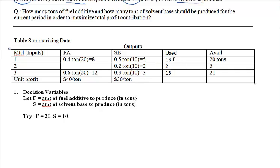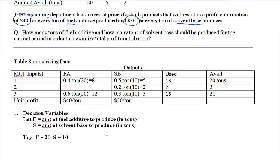The amounts used are all within the limits of the available amounts, so this is feasible. It's possible to make 20 tons of fuel additive and 10 tons of solvent base with the available materials. The next question might be: how much profit can we make from this?